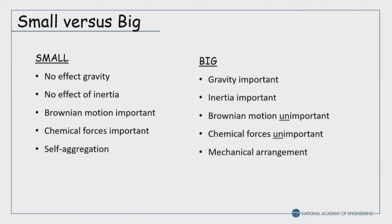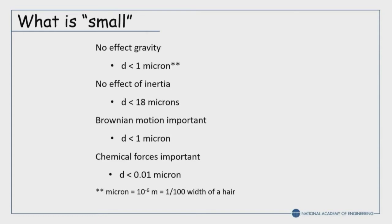What is small? If you don't want gravity to have an effect in things like water, you have to be smaller than a micron or so. Chemical forces operate at around 0.01 microns. A micron is about one one-hundredth of the size of a hair, so it's still pretty small by itself. These are the size ranges we're talking about.